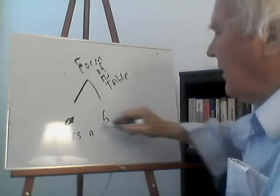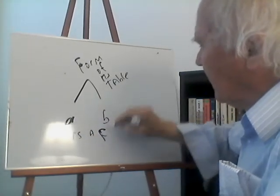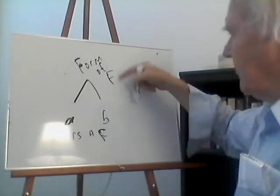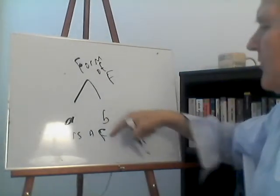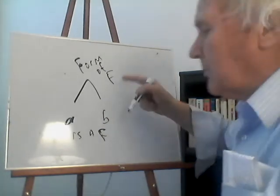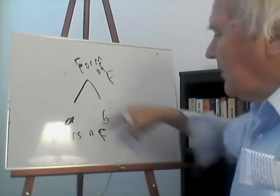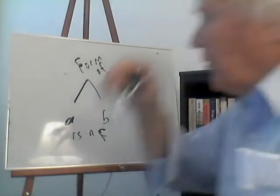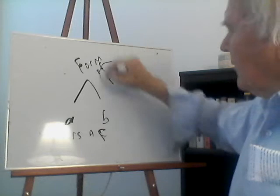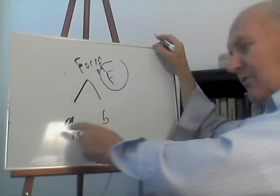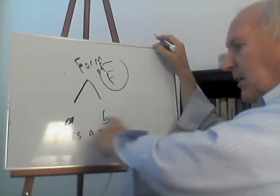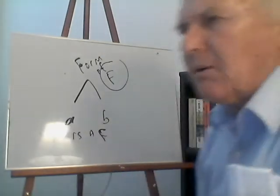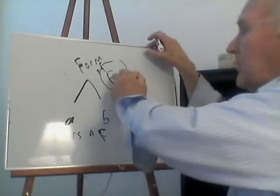To generalize: if A is F and B is F, then they participate in the form of F — I'm using F for form. If A is a table and B is a table, they participate in the form of the table. That's called the one over many argument. The one is the form, and it makes sense of the many. It makes sense of what we mean when we say A is a table and B is a table — because they participate in the form of the table.